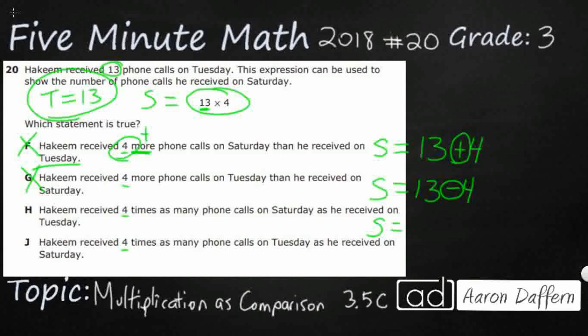So I'm going to do this. I'm going to just kind of do this. I'll say Tuesday is, I'm going to just put a box right here. So Tuesday is 13. And so if Hakeem received four times as many on Saturday, it's going to be four boxes or four groups of 13. I just want to make like a little strip diagram here just to try to represent what we have.